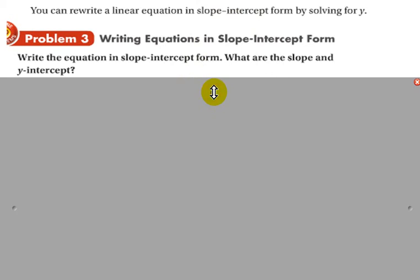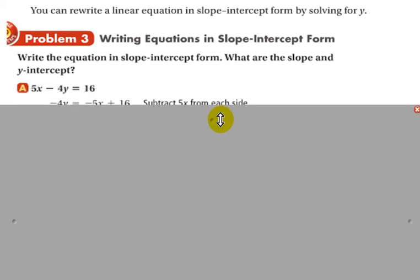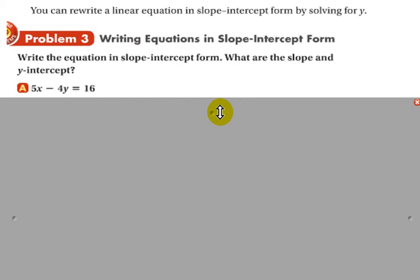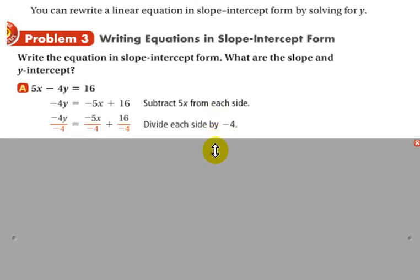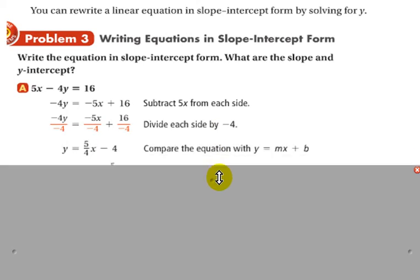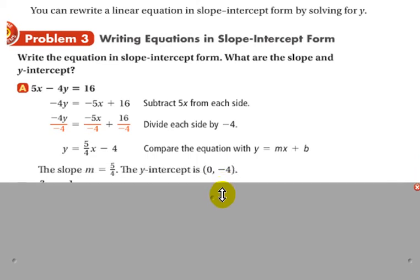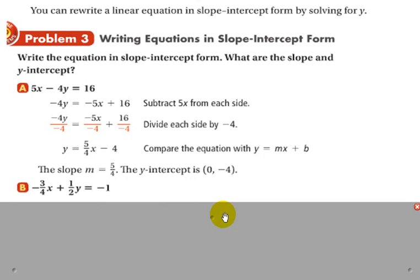Writing equations in slope-intercept form. Now, it says write the equation in slope-intercept form. What are the slope and the y intercept? And they give us 5x minus 4y equals 16. So, the first thing you have to do is solve for y. So, what you want to do first is subtract 5x from each side. And you end up with negative 4y equals negative 5x plus 16. Now, divide each side, every term, by negative 4. When you do that, you get y equals positive 5 fourths x minus 4. So, you've got a slope of 5 fourths and a y-intercept of negative 4.